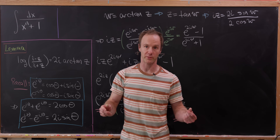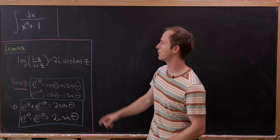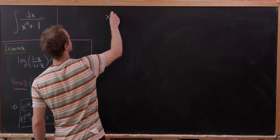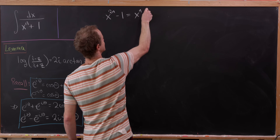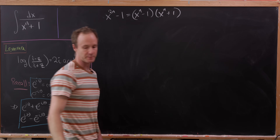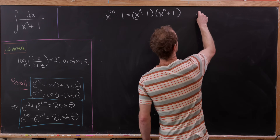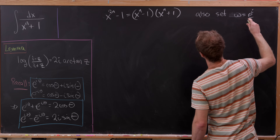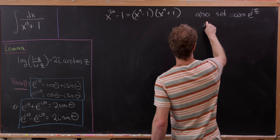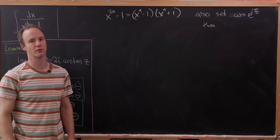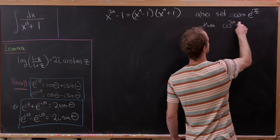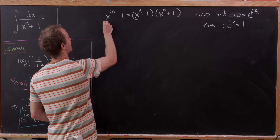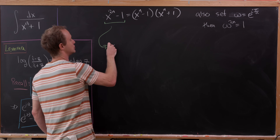Now that we have that formula, the next step is to begin the partial fraction decomposition of the integrand. We start with two facts. First, x to the 2n minus 1 equals x to the n minus 1 times x to the n plus 1. And if we set omega equal to e to the i pi over n, that is a primitive 2nth root of unity — meaning omega to the 2n equals 1, and no lower power of omega equals 1. This gives a factorization of x to the 2n minus 1.